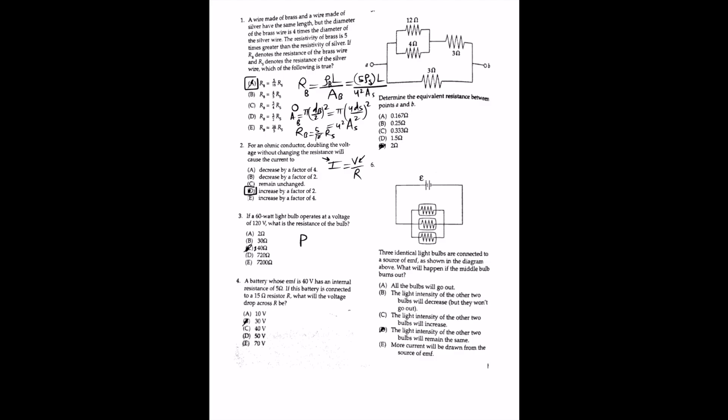For the third question, if a 60-watt light bulb operates at a voltage of 120 volts, what is the resistance of the bulb? Using the equation P = V²/R, the resistance equals V²/P, which is 120² over 60 watts, equal to 240 ohms. The answer is C.